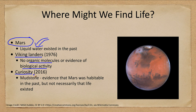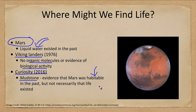The Curiosity rover in 2016 found mudstone. Why is this evidence that Mars was habitable? Because mudstone is something that had to form in water. So we do know for sure that Mars was habitable in the past. Does that mean life existed? No — it does not mean that life necessarily existed, only that it was possible for life to have formed. Life formed quickly on Earth; could it have formed quickly on Mars?